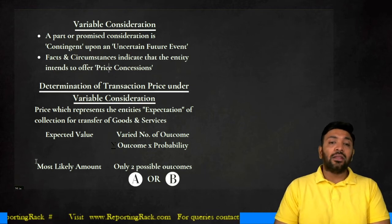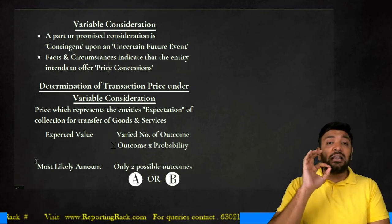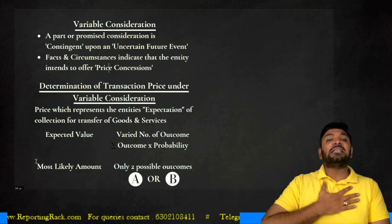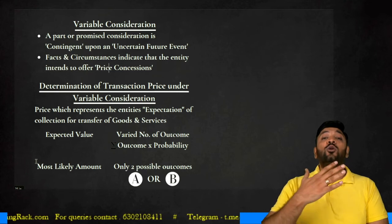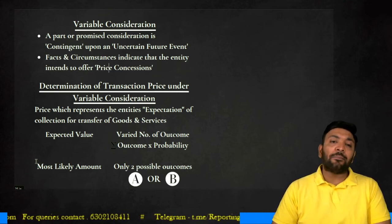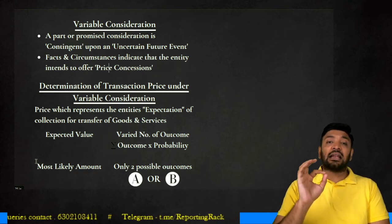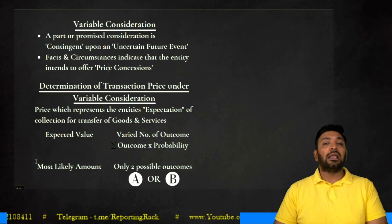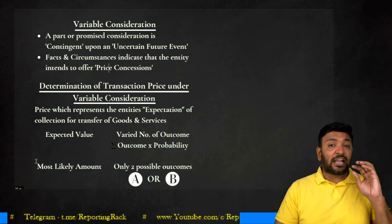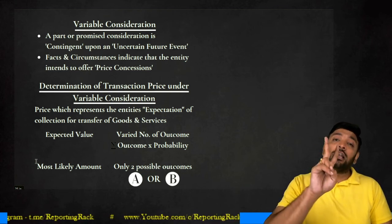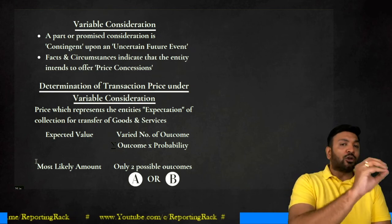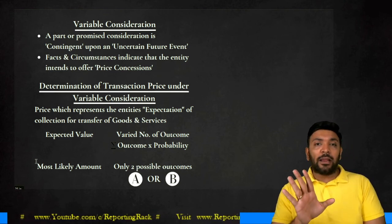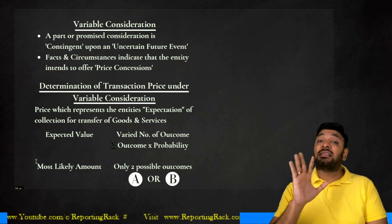When multiple outcomes are possible under variable consideration, the transaction price should represent the entity's best expectation of the consideration to be received for the transfer of goods and services. There are two ways of determining transaction price under variable consideration. The first is called the most likely amount — if there are only two possible outcomes, you select the most likely one. The second method is called the expected value — if there are three or more possible outcomes, the expected value method is used.